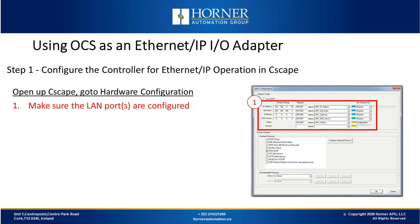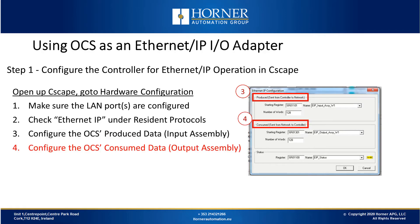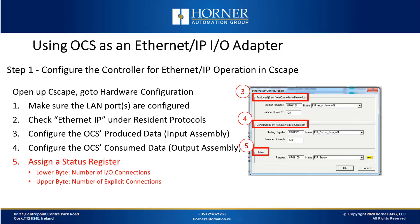Now we'll run through configuring the controller for Ethernet IP operation in Seascape. You'll open Seascape and go to Hardware Configuration. First, you'll make sure the LAN ports are configured. Then you'll ensure the Ethernet IP checkbox is checked under Resident Protocols. Then you'll configure the input assembly, which is the OCS's produced data. Then you'll configure the output assembly, which is the OCS's consumed data. And lastly, you'll configure a status register so you can see when communications are lost.